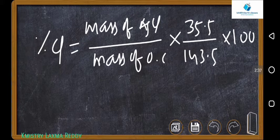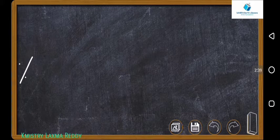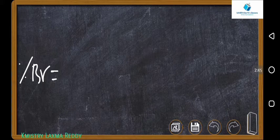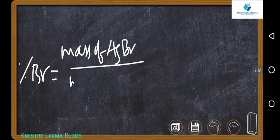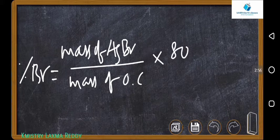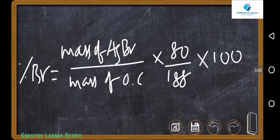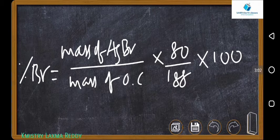If it is for chlorine, you want for bromine. Bromine percentage is equal to mass of AgBr by mass of organic compound into bromine atomic mass by molecular mass of AgBr into 100. That is 80 by 188.